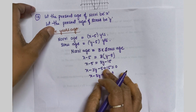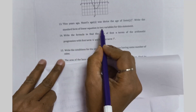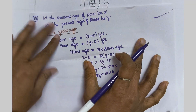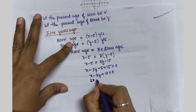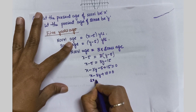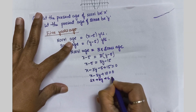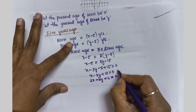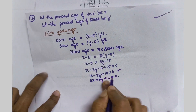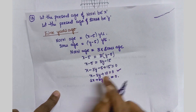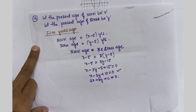The standard form of linear equation in two variables is ax + by + c = 0. So the final answer is x − 3y + 10 = 0, which is in the standard linear equation form in two variables.